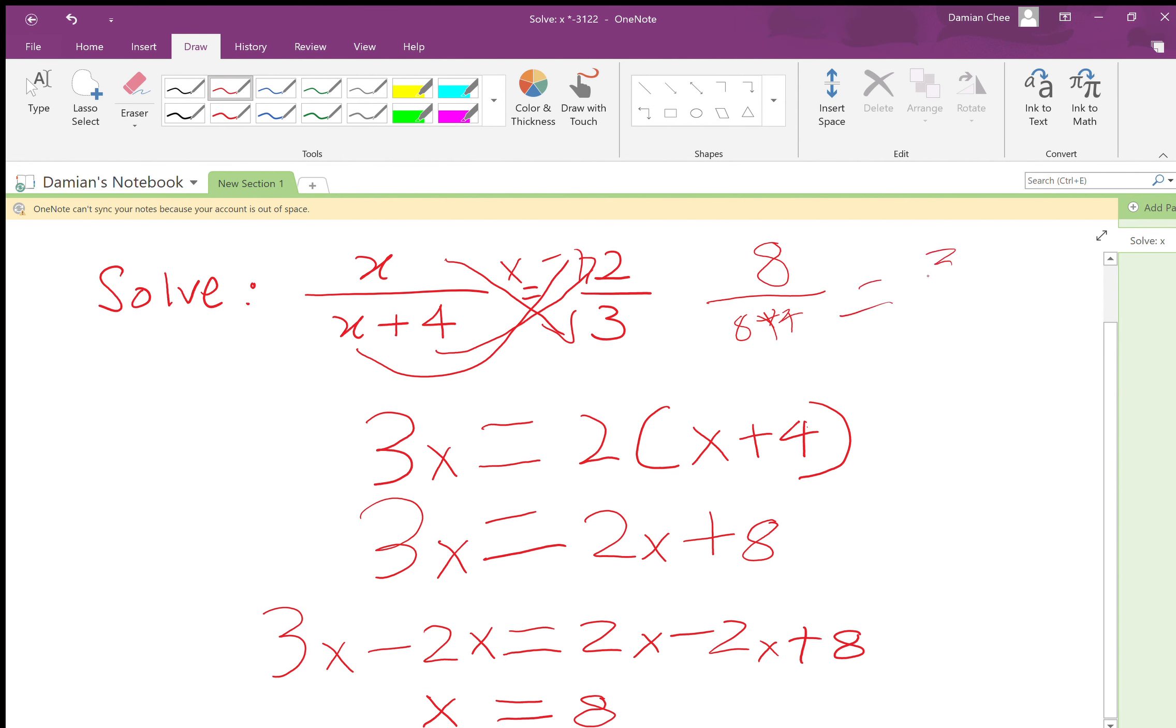8 plus 4 is 12, so 8 over 12. Is it correct? 8 over 12 equals 2 thirds. So therefore, x equals 8.